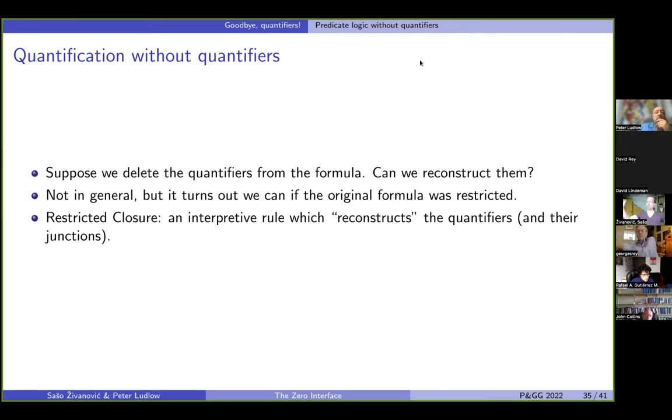So, how do we want to go about this? Let's take a formula with quantifiers. Imagine that we deleted all the quantifiers from this formula. Another question is, could we possibly reconstruct these quantifiers? And in general, that of course won't work. But it turns out that if the original formula was restricted, then we can do this in a unique way. So, what we will propose is an interpretive rule, a restricted closure, which sort of reconstruct the quantifiers and actually also their junctions. Although we don't really want to say that something is really reconstructed, we consider it an interpretive rule that tells us how to interpret a formula as if those guys were reconstructed.